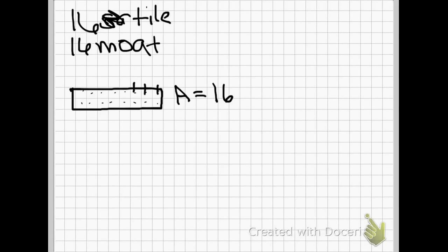1, 2, 3, 4, 5, 6, 7, 8, 9, 10, 11, 12, 13, 14, 15, 16, 17, 18, 19, 20. The perimeter equals 20. So I can't put my 16 moat tiles around my castle.